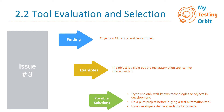A good solution is to get a trial version and test it against your system or a sample project to see if all objects can be captured on the user interface. If there is an issue, it indicates a compatibility problem with that specific tool. Also, have developers define standards for objects — many companies have coding standards, but where none exist, having best coding practices will help testers locate objects using the test automation tool.